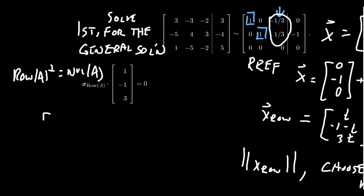And that should equal zero. And so if you take what we got for X-row a moment ago, [T, -1-T, 3T], and we dot this with the vector [1, -1, 3], which was a basis element for the null space there, that should equal zero.